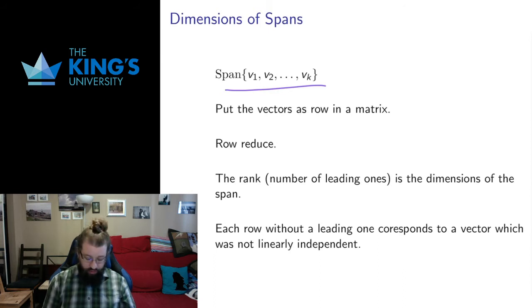How I do this is I take these vectors and put them as rows in a matrix and I row reduce, and then the rank is going to be the dimension of the span. And even more specifically, if I keep track of which rows corresponded to which vectors, then each row without a leading one came from a vector which was not linearly independent, which was not needed in the span.